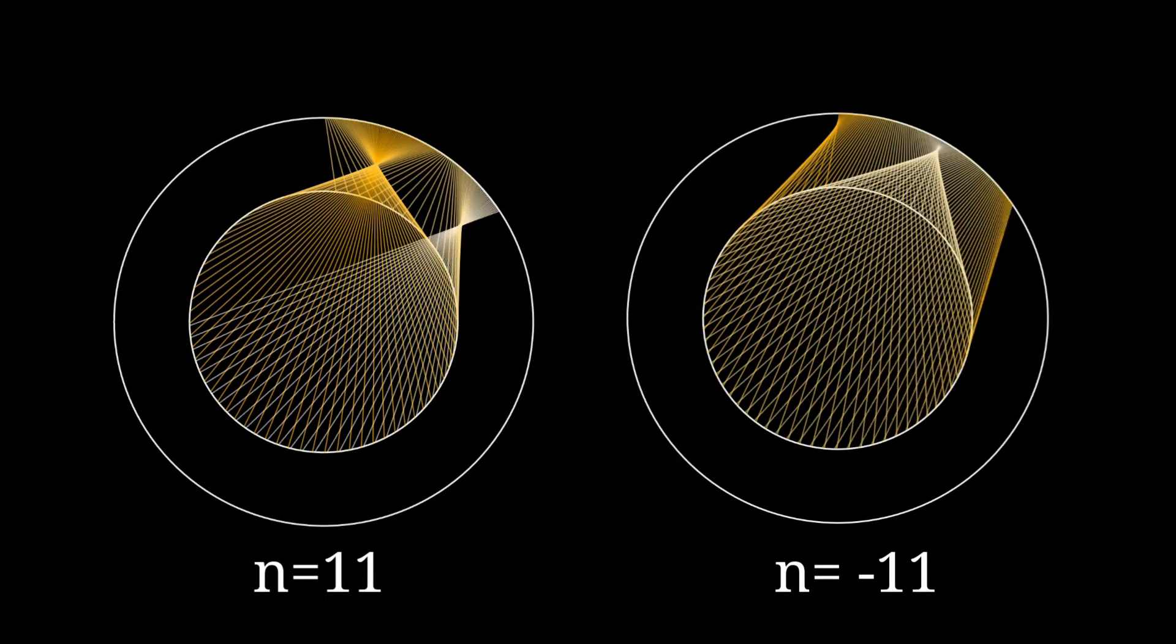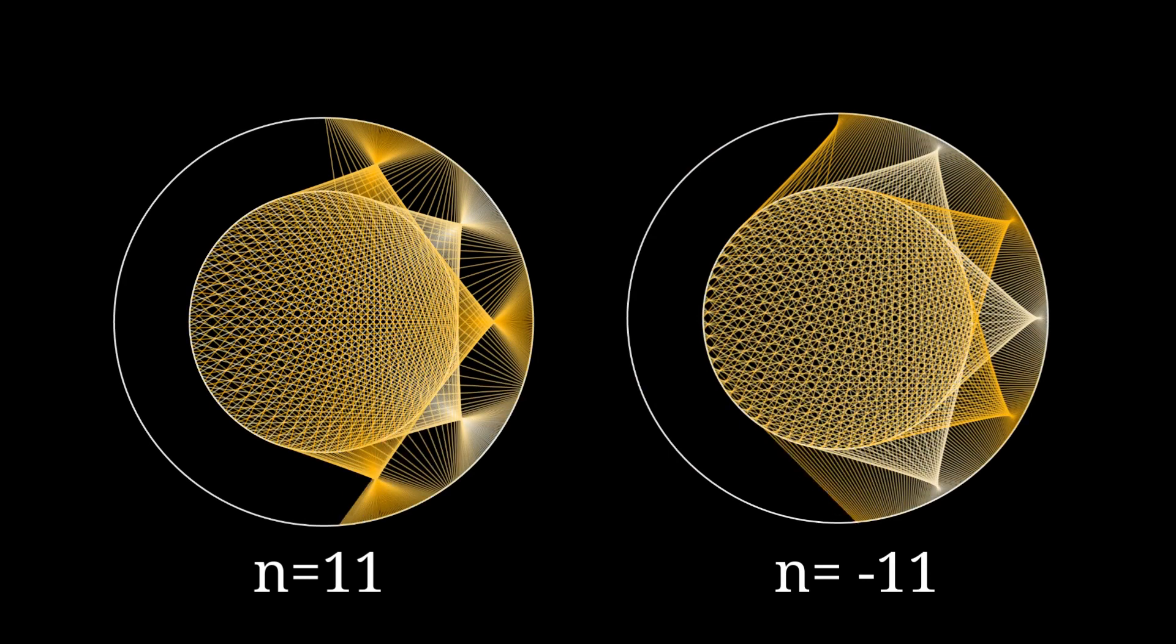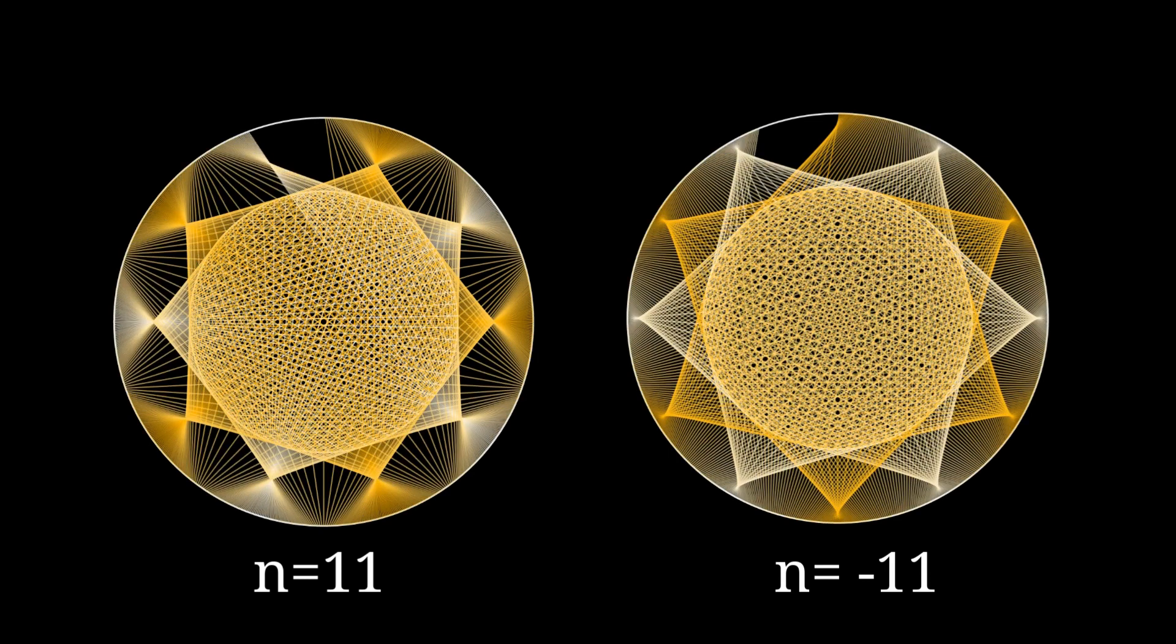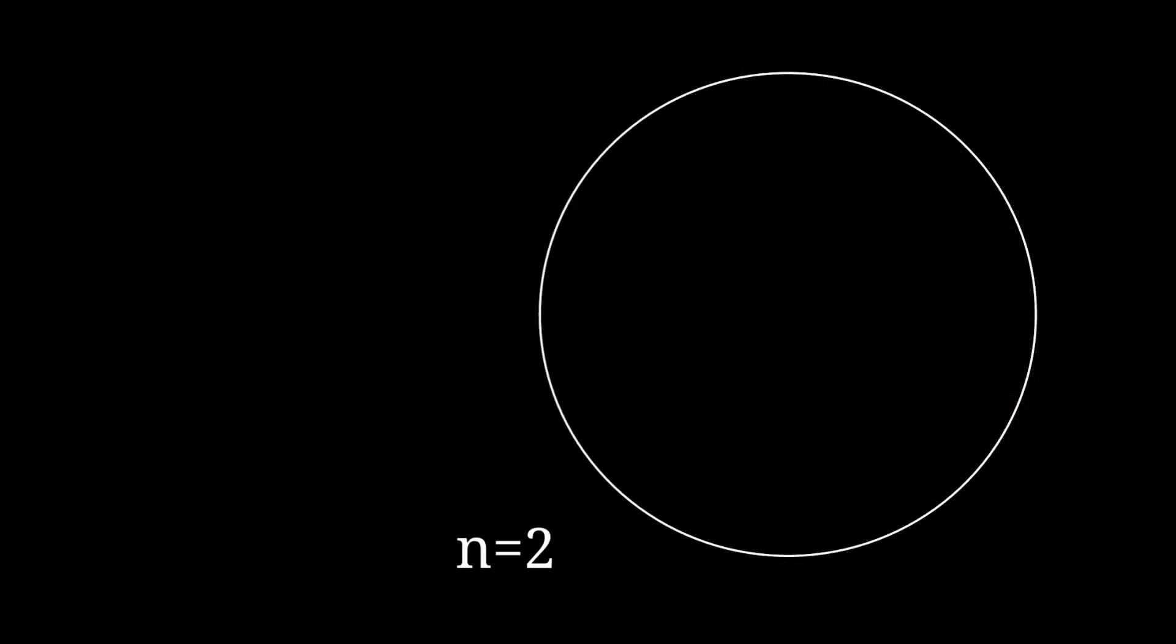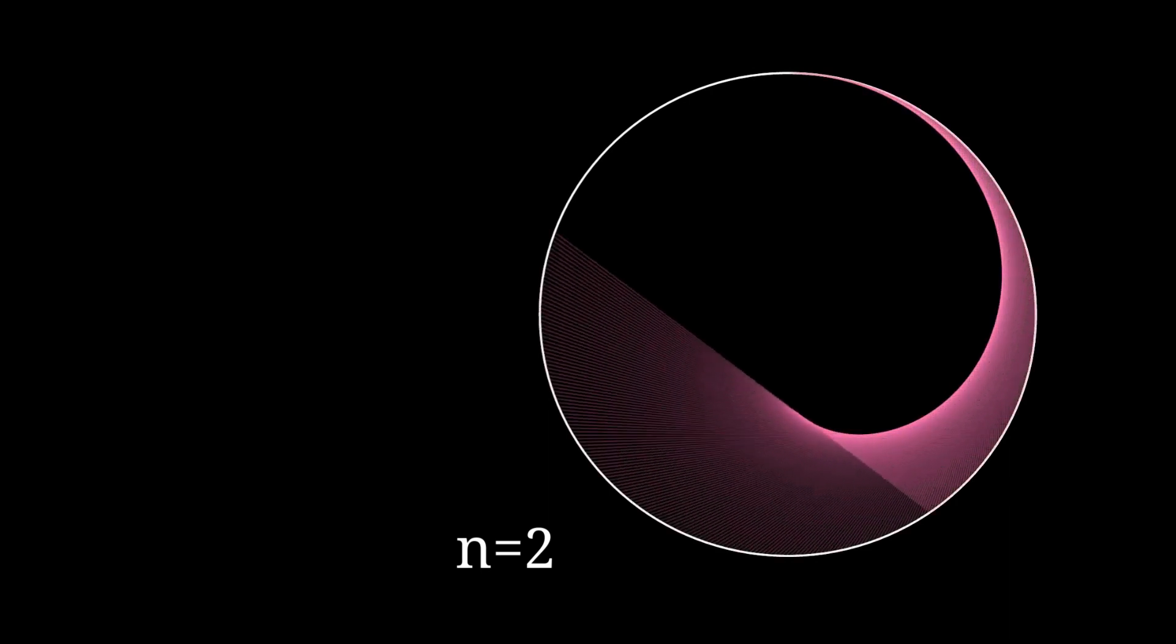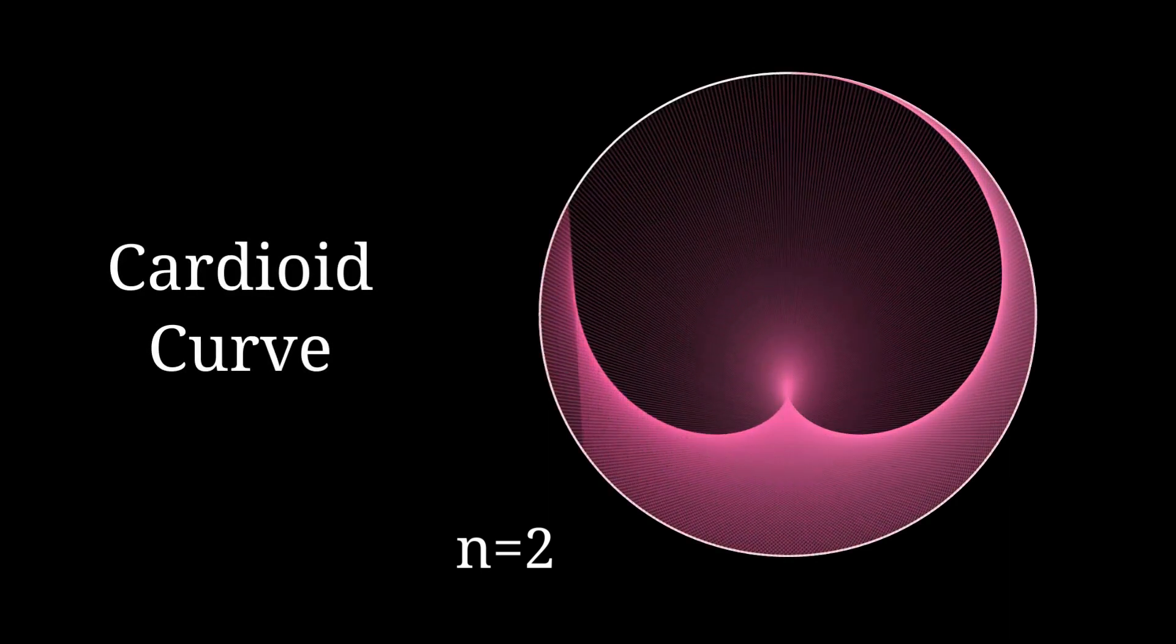It might even lead to some interesting mathematical insights. And when the two circles are the same size and n equals 2, you get a cardioid curve.